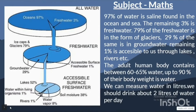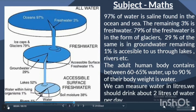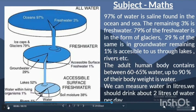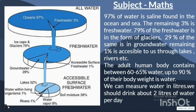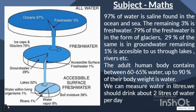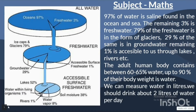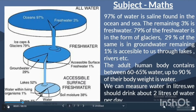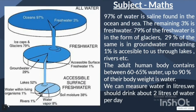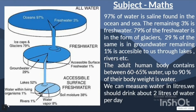97% of water is found in the ocean and sea. The remaining 3% is fresh water. 79% of the fresh water is in the form of glaciers, and 29% of the same is in groundwater.